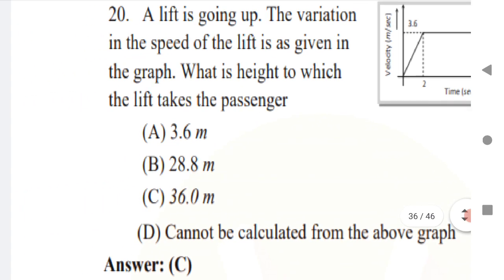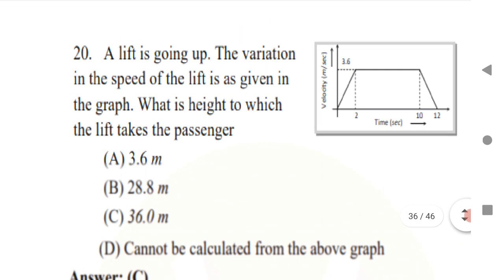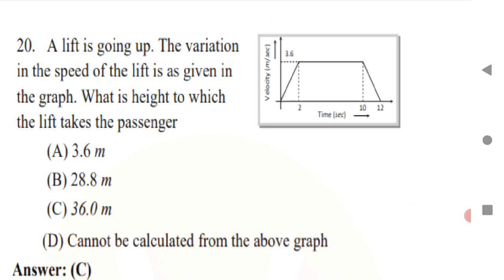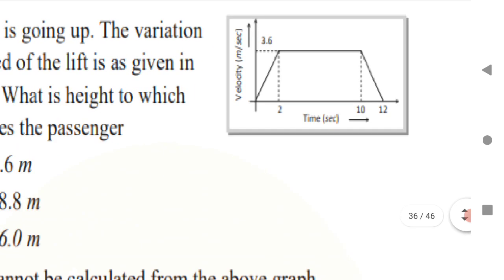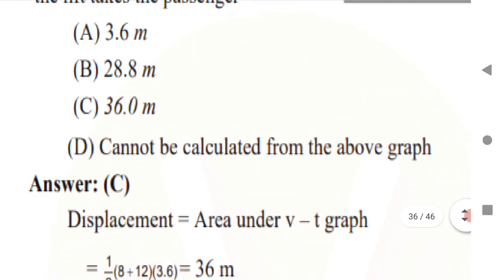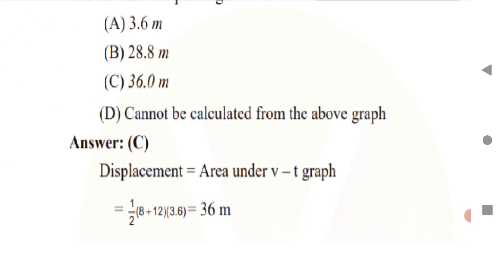What you need to find out is the height to which the lift takes the passenger. The graph has a trapezium shape. The formula is half times (longer diagonal plus shorter diagonal). The longer base is 12 and the shorter one is 8 (from 2 to 10). Multiplying with the height, which is 3.6, gives: displacement = half × (upper diagonal + lower diagonal) × height.